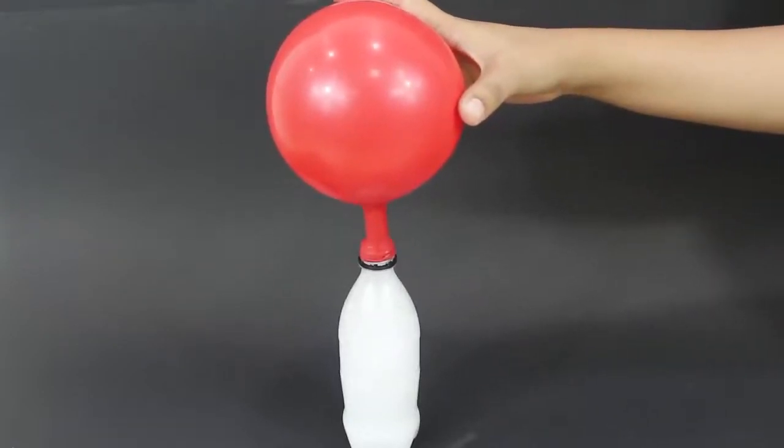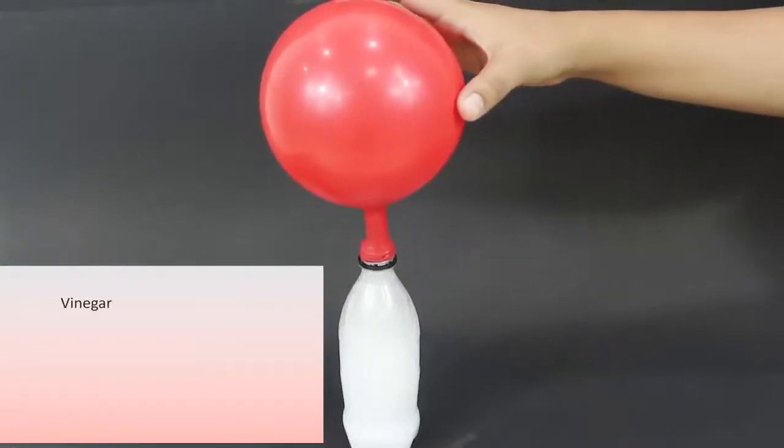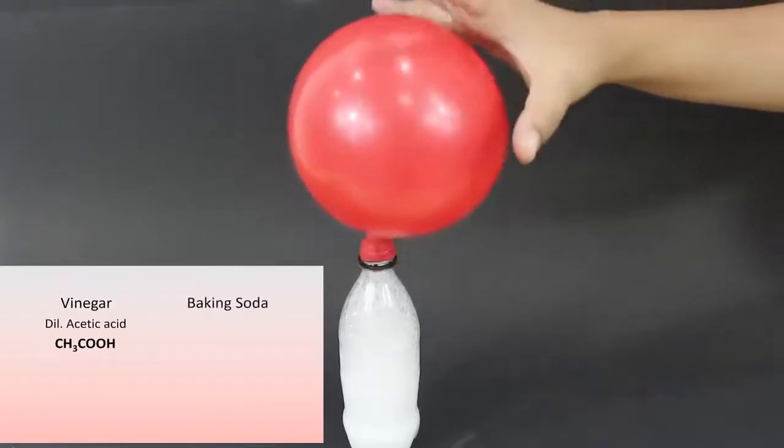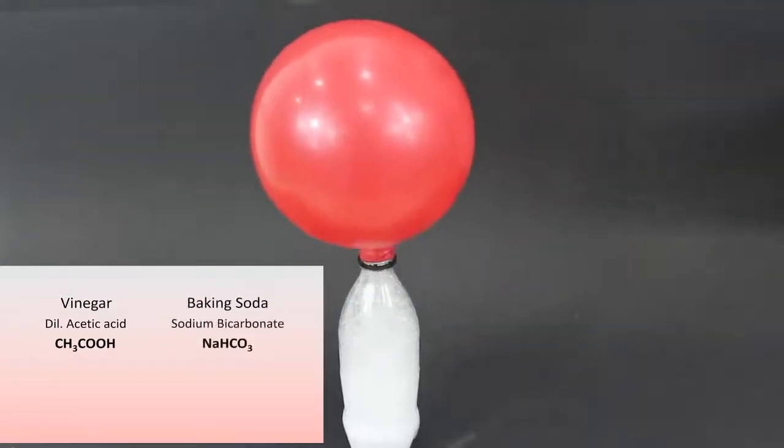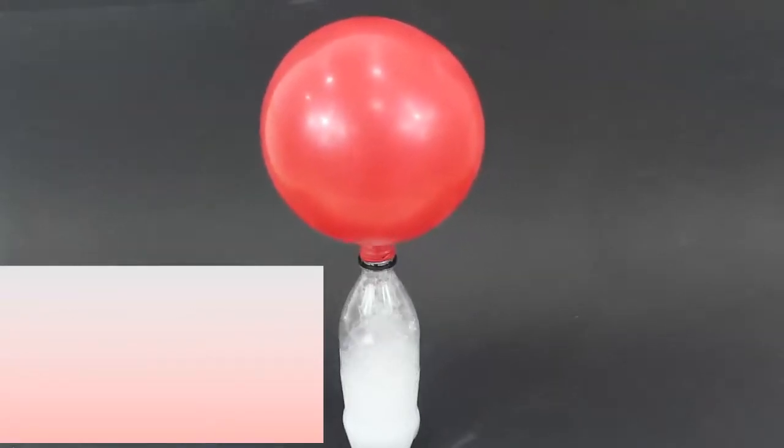Let's take a look at the chemical reaction that is taking place here. Vinegar is a dilute solution of acetic acid whereas baking soda is sodium bicarbonate which is alkaline in nature. Mixing these two chemicals is an example of acid-base neutralization reaction.